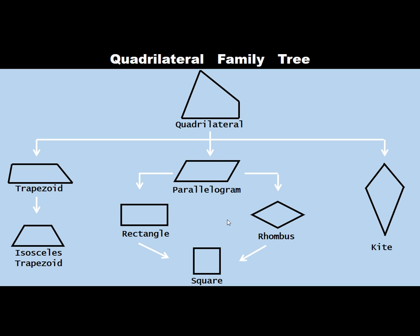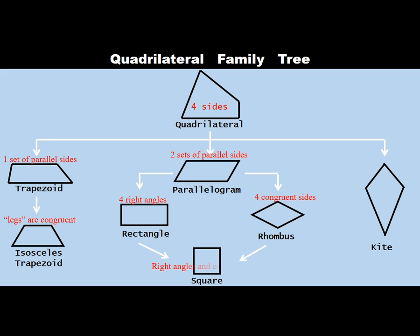Here's our family tree summary in words. A quadrilateral just has four sides. A trapezoid has one set of parallel sides. An isosceles trapezoid has a set of parallel sides and the legs are also congruent — the two other sides are congruent to each other; they're not parallel, just congruent. A parallelogram has two sets of parallel sides — top parallel to bottom, left parallel to right. A rectangle is a parallelogram with right angles. A rhombus is a parallelogram with all four sides the same length. A square gets all the rules for a rectangle and a rhombus — right angles and all four sides congruent. A kite has congruent sides, but they're not opposite each other; they're next to each other instead.